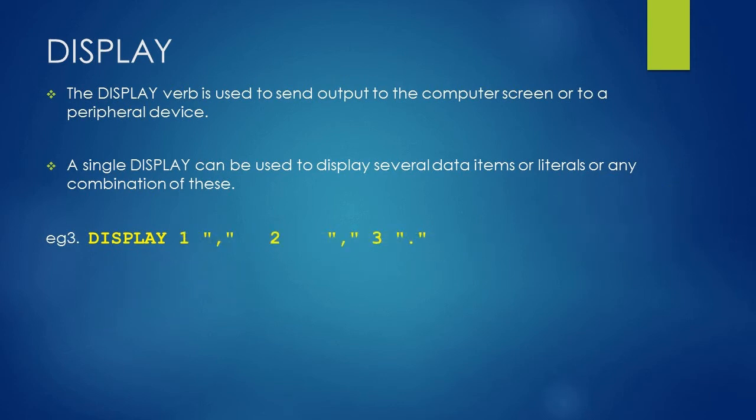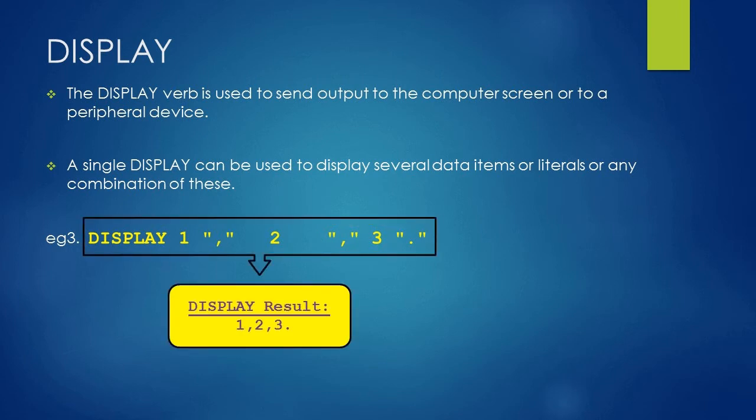In example three, we have used a DISPLAY statement with multiple items. In this example, we are displaying one that is a numeric literal followed by a comma. As comma is an alphabetic literal, we have wrapped it under double inverted commas. Then we have given two, then again we have given comma, then three, then period. The output of this DISPLAY statement will be 'one comma two comma three dot.' Please note that there will be no space in the output. To give a space, we need to specify a space under the double inverted commas.